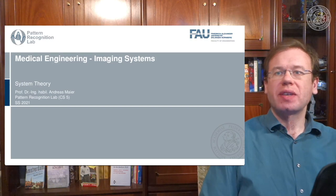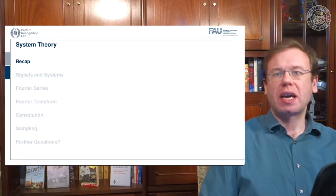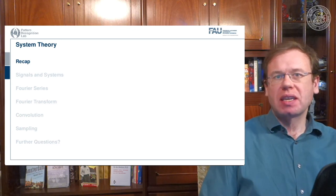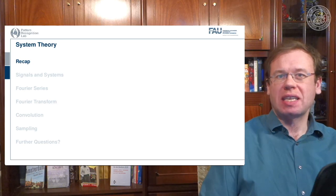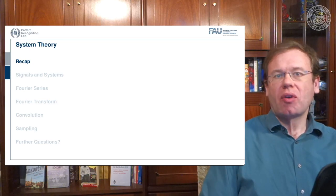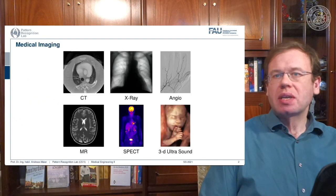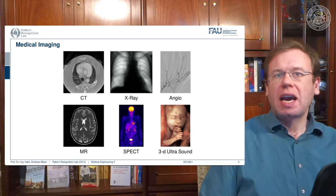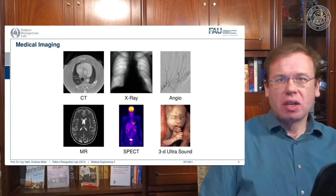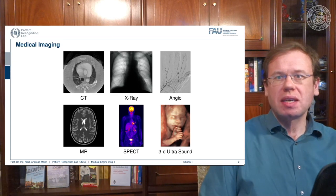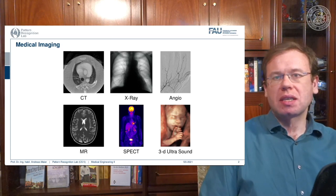Our topic today is systems theory, and we want to start with a short recap of why we actually need systems theory and what kind of data we're dealing with in medical imaging. We've seen the different imaging modalities - those modalities had very different appearances, very different contrasts. We've seen examples from CT to x-ray to angiography, MR, SPECT, and also ultrasound. So we've seen we have many, many different modalities, and all of those modalities have very different properties.